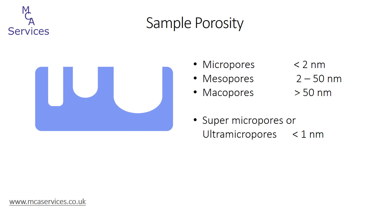We will follow the progression of a gas adsorption analysis and we'll use the model isotherm we've just looked at. In this image we've drawn a simplified two-dimensional representation of a sample, showing the solid portion of the sample in blue, and we've also put three pores into this sample: a micropore, which is the smallest, a mesopore in the middle, and a macropore.